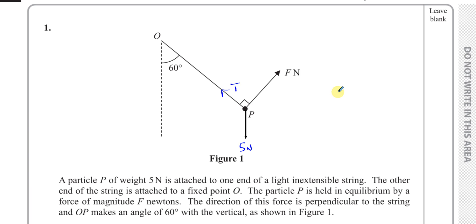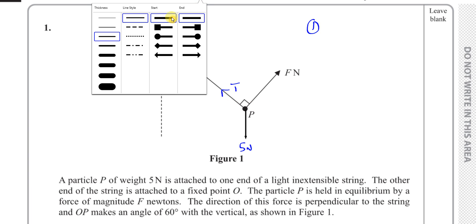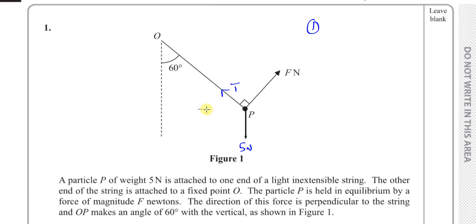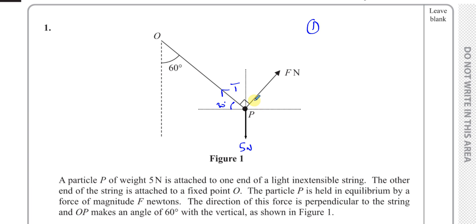There are two ways to tackle this question. One way would be to resolve the forces horizontally and vertically, which is what you normally would do in a question of this nature. You would resolve the forces horizontally and vertically and then say that it's in equilibrium, so the forces are balanced. We know this is vertical, so this angle is 60 degrees over here. If this angle is 60, then this must be 30, so this must also be 60, and this must be 30 degrees.